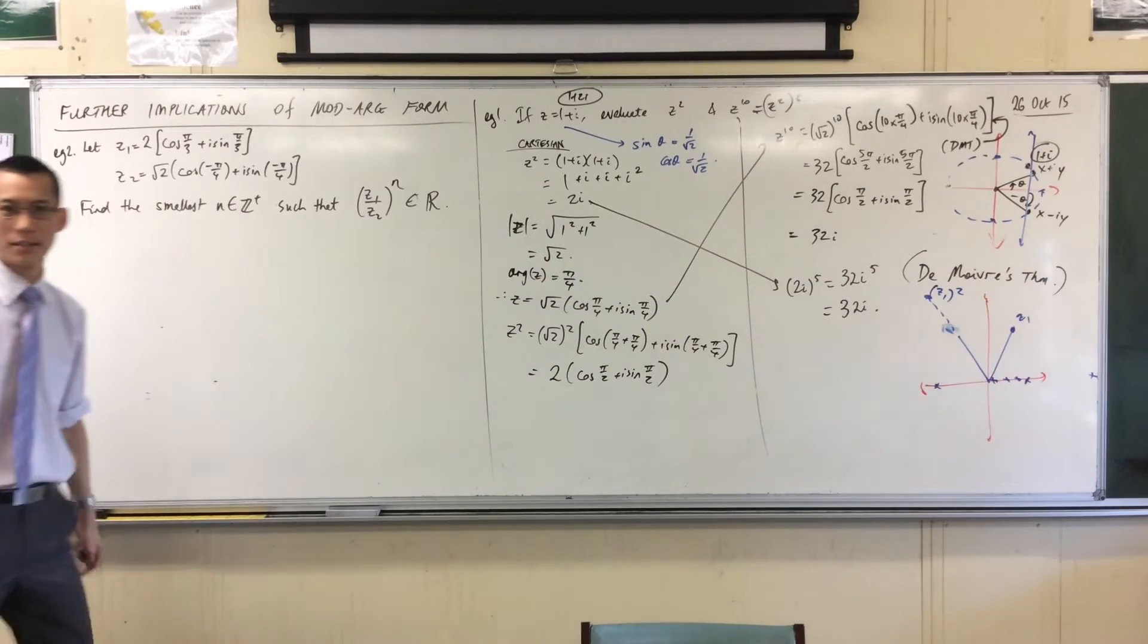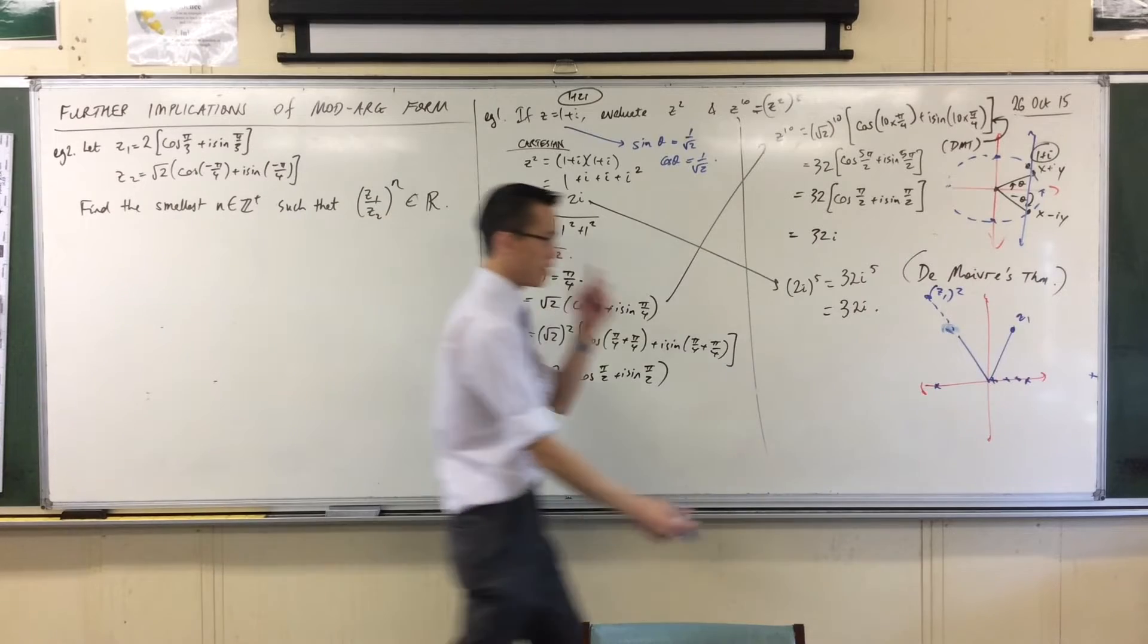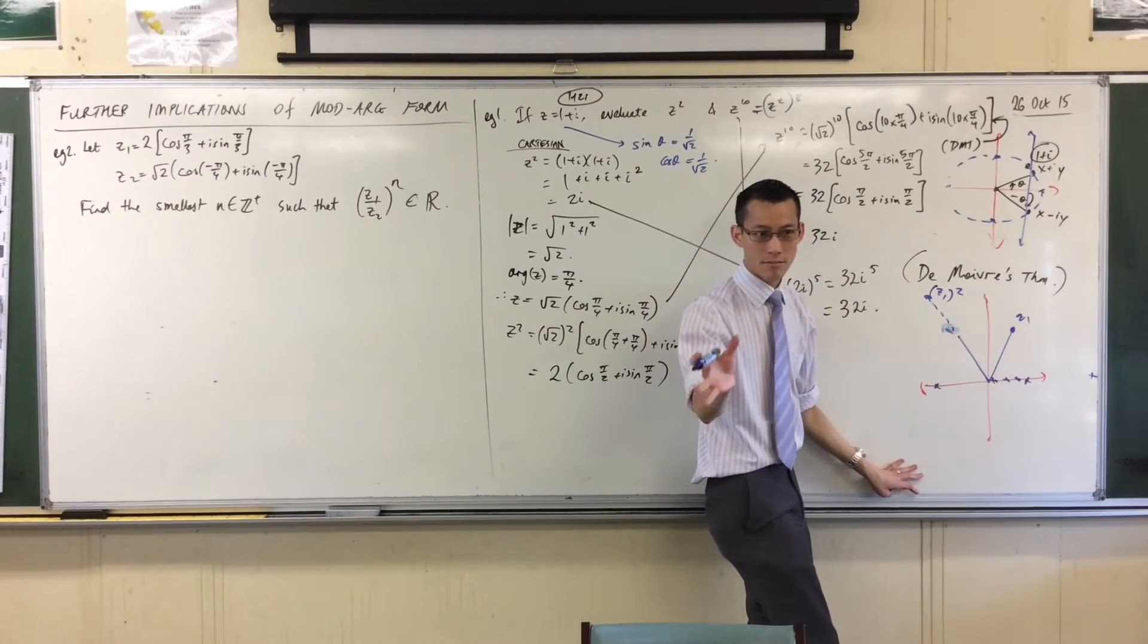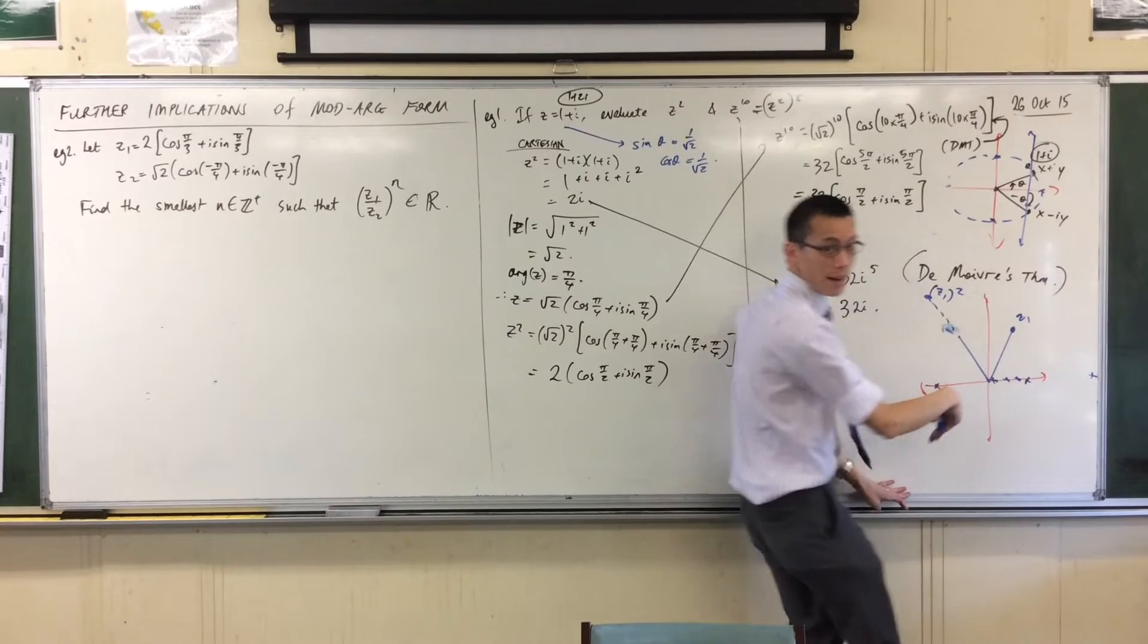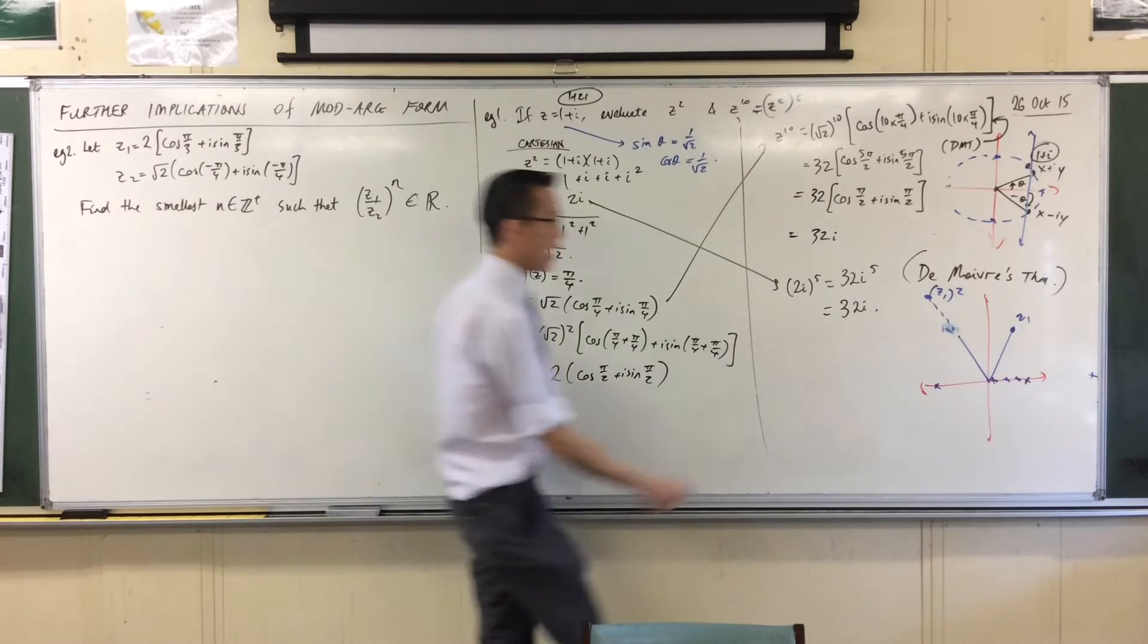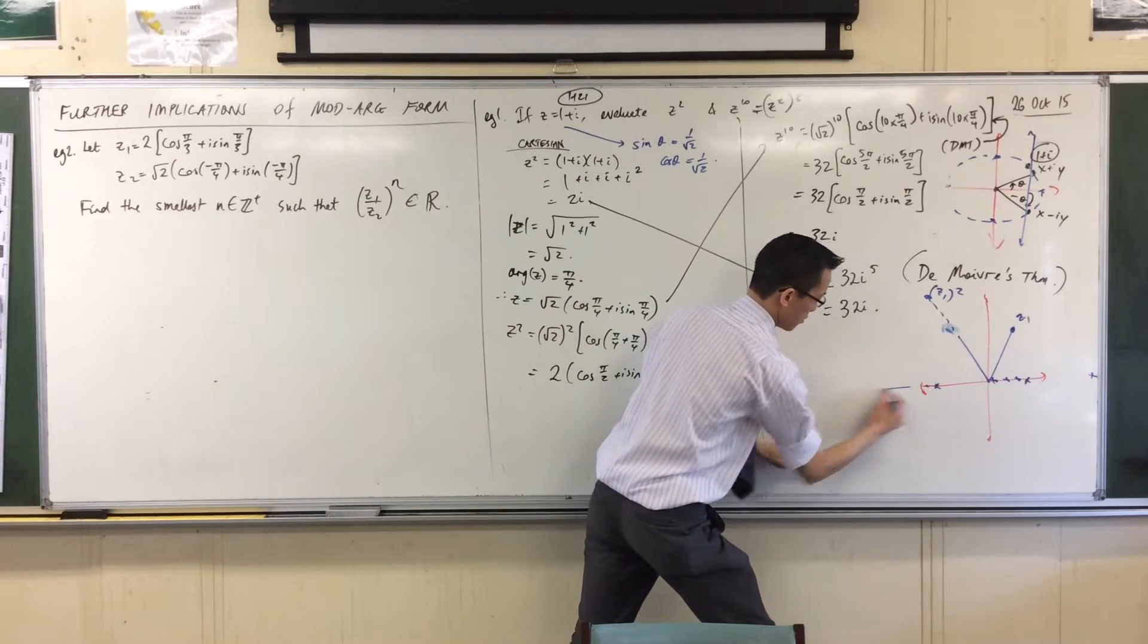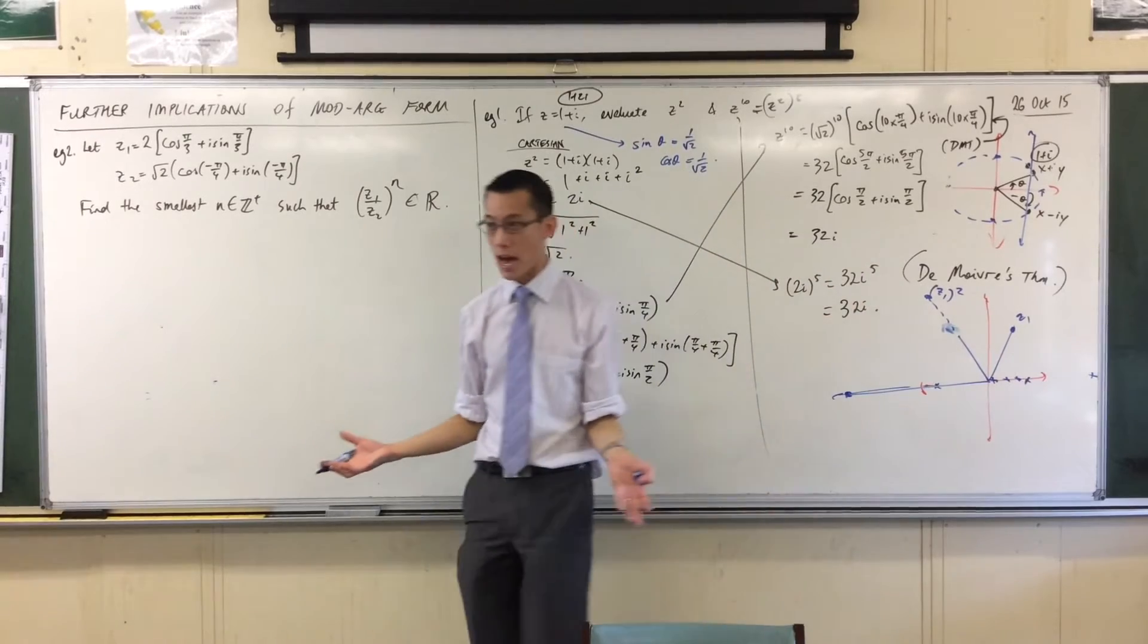Where would z1 cubed be? The angle will be tripled from the original. Thinking back in degrees, 60 degrees will become 180, right? Or, more accurately, π/3 will become π. So, I'm going to come down to here. So, now I'm on the real axis. Are you happy with that?